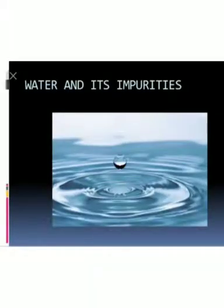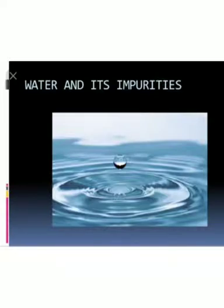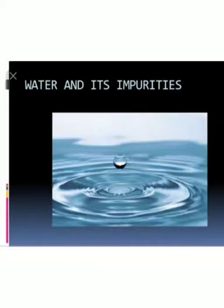تو کیا کیا impurities ہوتی ہیں ان پانی میں؟ sand ہوتا ہے، dirt یعنی گندگی ہوتی ہے، mud یعنی مٹی ہوتی ہے، اور بہت سارے germs یعنی جراثیم۔ اس لئے ان sources کا پانی قابل استعمال نہیں ہے — کیونکہ ان میں بہت ساری impurities ہوتی ہیں، ایسے substances جیسے sand اور dirt۔ ان کو ہم بولتے ہیں impurities۔